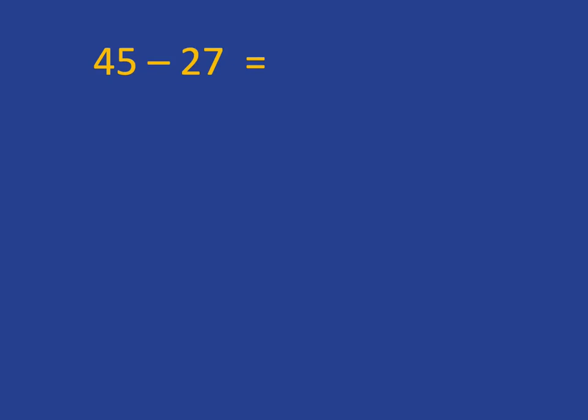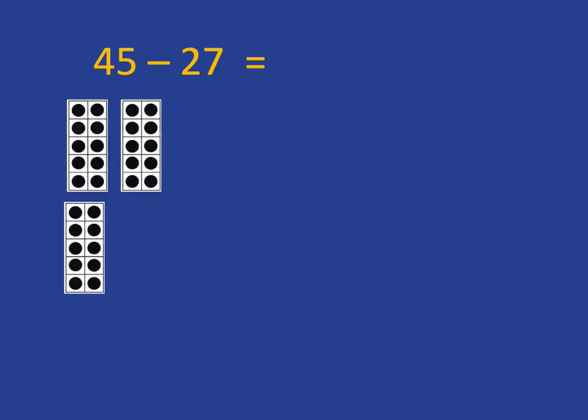If we want to do a calculation like 45 subtract 27, this is a bit more of a complicated subtraction, so let's go back to working with our concrete material. So we need to lay out 45, which we know is four tens and five ones. We now need to take away 27, so we need to take away two tens and seven ones. Let's start with the ones, and we need to take away seven ones, but there are only five ones there, so we can't take away seven ones.